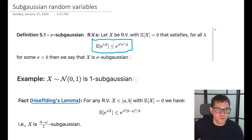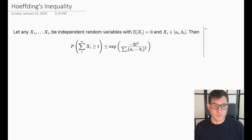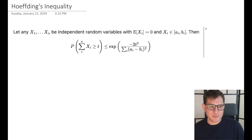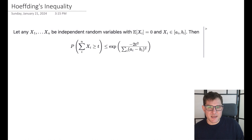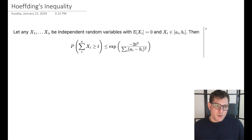This fact — that bounded random variables are sub-Gaussian with constant depending on the range (b minus a) divided by two — is Hoeffding's Lemma. The proof is a technical exercise; in previous versions of the course I went through it, but it's available in the Mohri et al. Foundations of Machine Learning textbook and we'll have a link in the course notes. We're going to use this fact to prove Hoeffding's inequality.